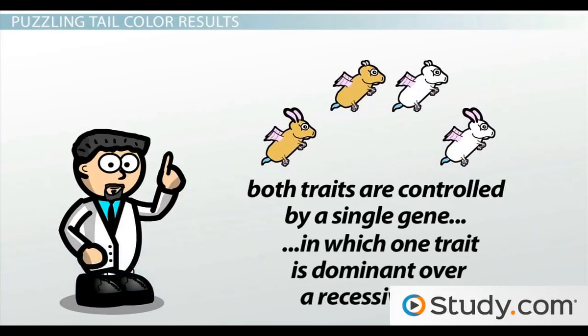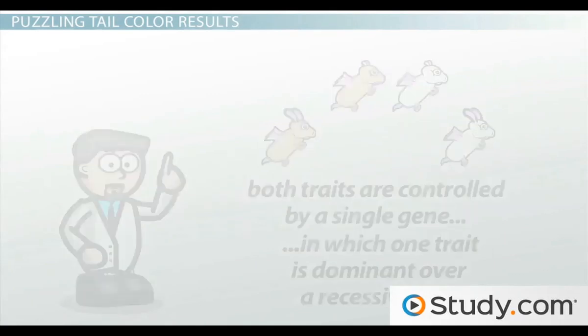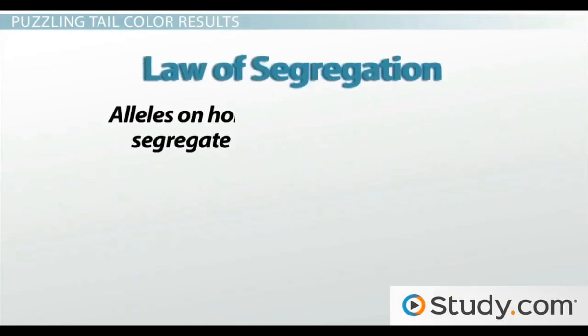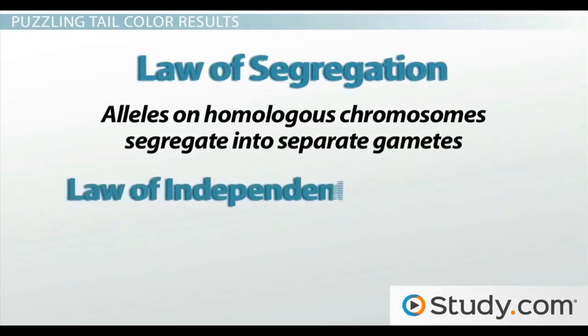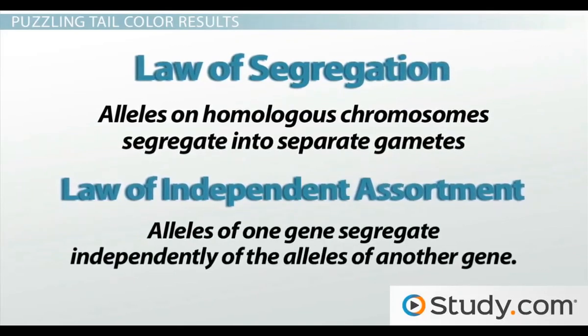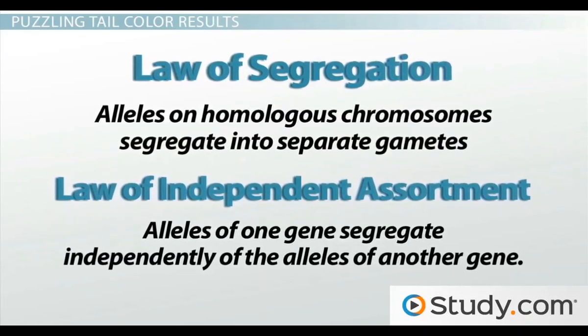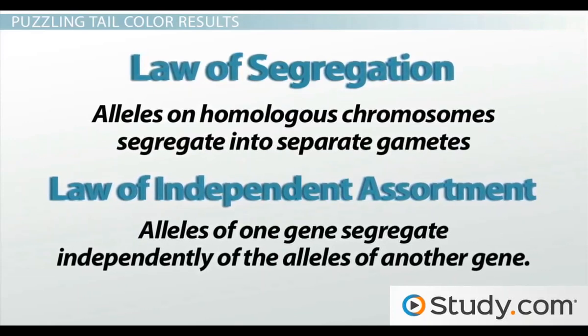With a little help from us, he's also discovered Mendel's laws, which taught him that alleles on homologous chromosomes segregate into separate gametes (law of segregation), and also that alleles of one gene segregate independently of the alleles of another gene (law of independent assortment).